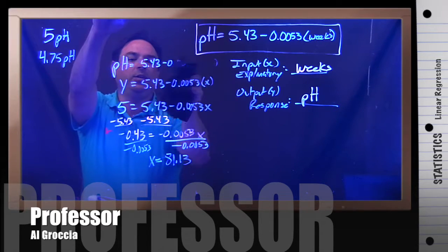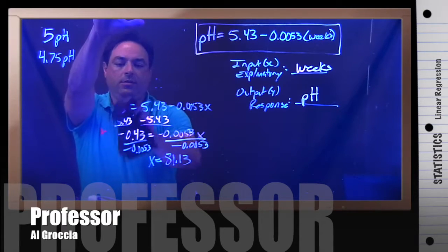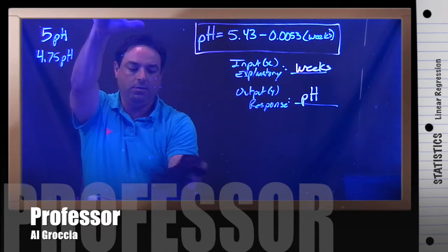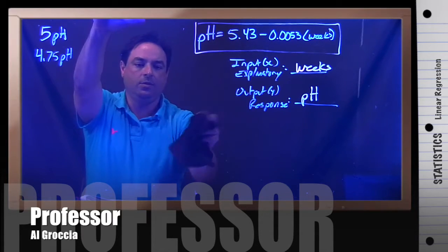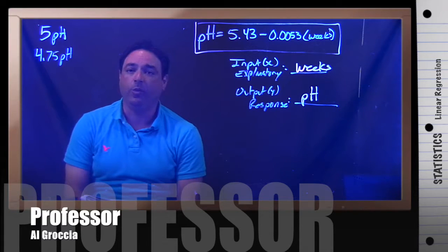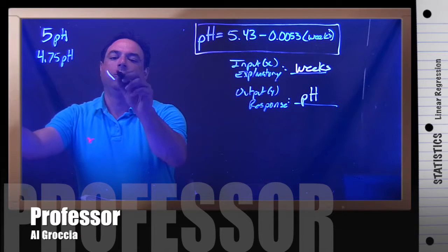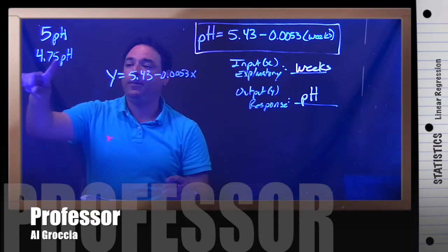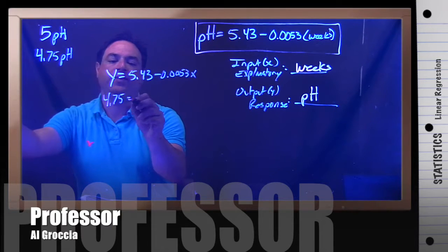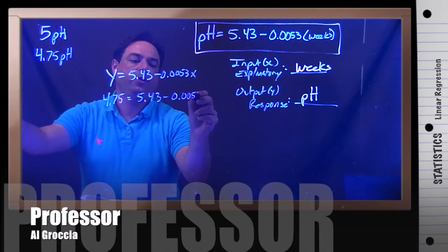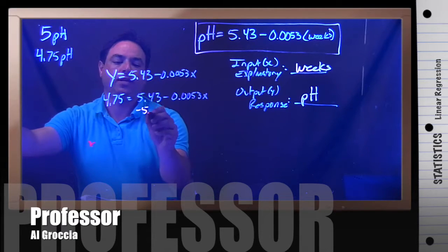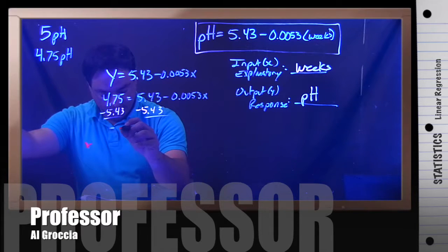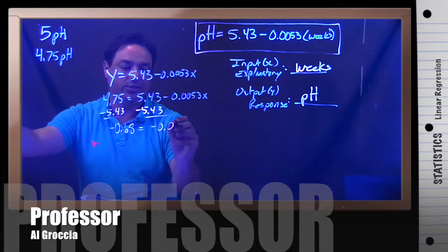Let's go ahead and answer the second question. So our second question is, when will the pH reach 4.75? So we'll write our equation: y equals 5.43 minus 0.0053 times x. Again, pH is y, so we'll plug in the 4.75 in for y, and we'll solve for x, x being weeks. So we subtract 5.43 from both sides, which gives us negative 0.68 equals negative 0.0053x.